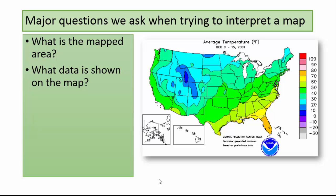Let's think for a minute about what surface temperature is. It is the long wave radiation released by the surface of the Earth. It results from the interaction of sun energy, or insolation, with surface materials.